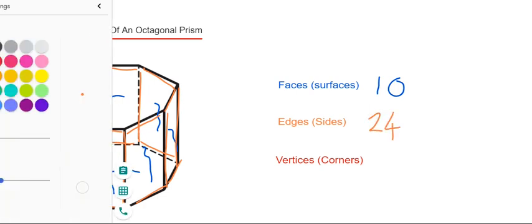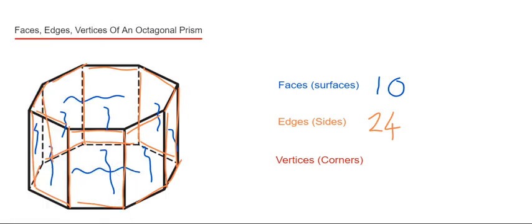And then the vertices are the corners of the shapes — that's the sharp bits. So one, two, three, four, five, six, seven, eight, and then nine, ten, eleven, twelve, thirteen, fourteen, fifteen, sixteen.